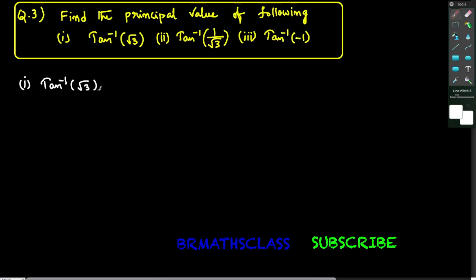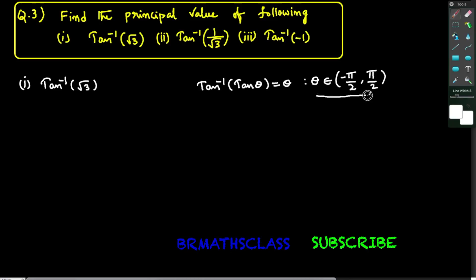To find the principal value of tan inverse of root 3, I want to use the formula: tan inverse of tan θ equals θ. This formula holds good only when θ belongs to the open interval (−π/2, π/2). I want to write root 3 in the form of tan θ so that I can use this formula.